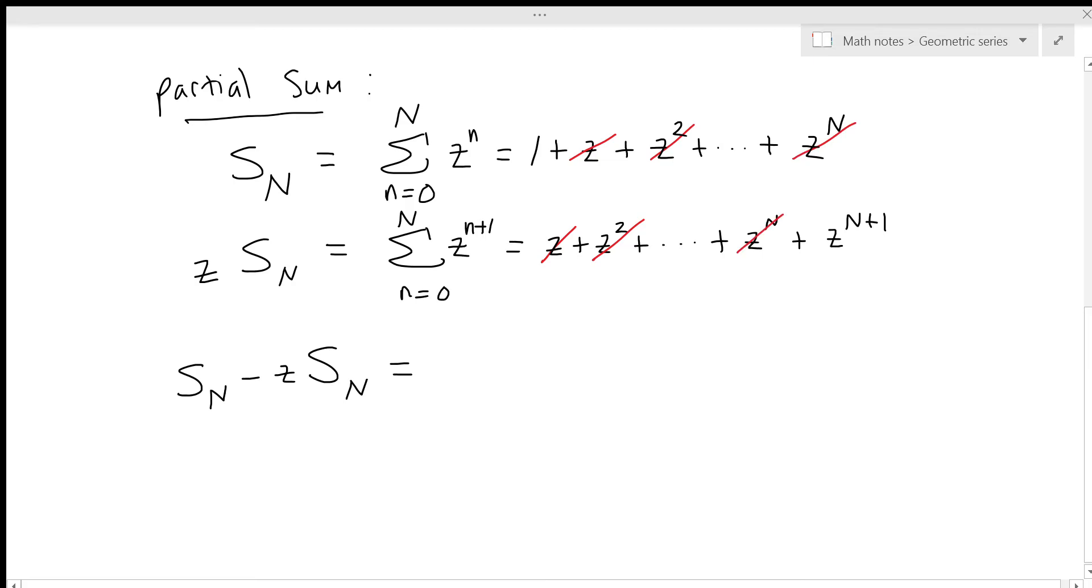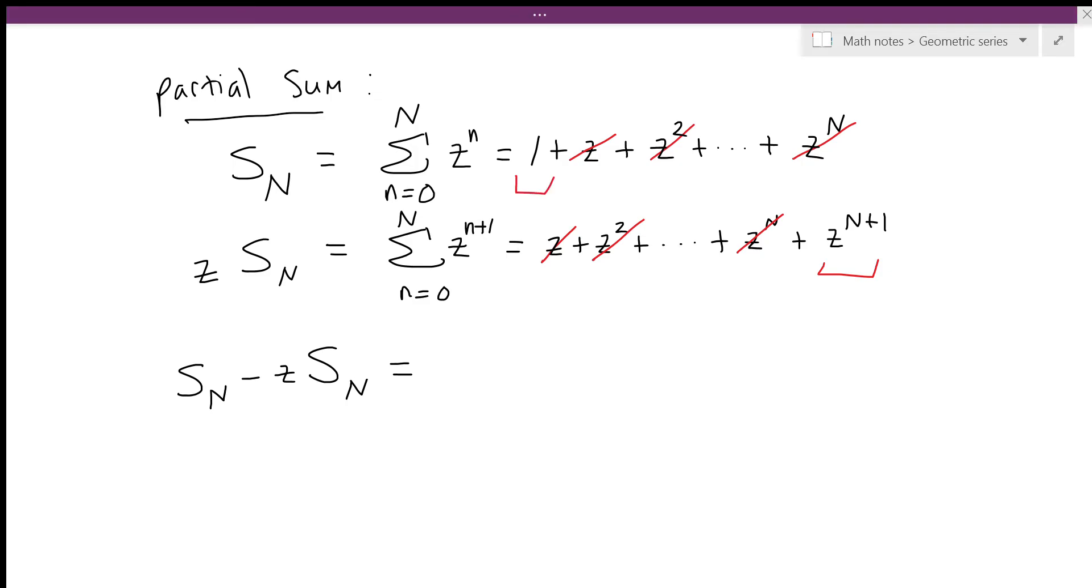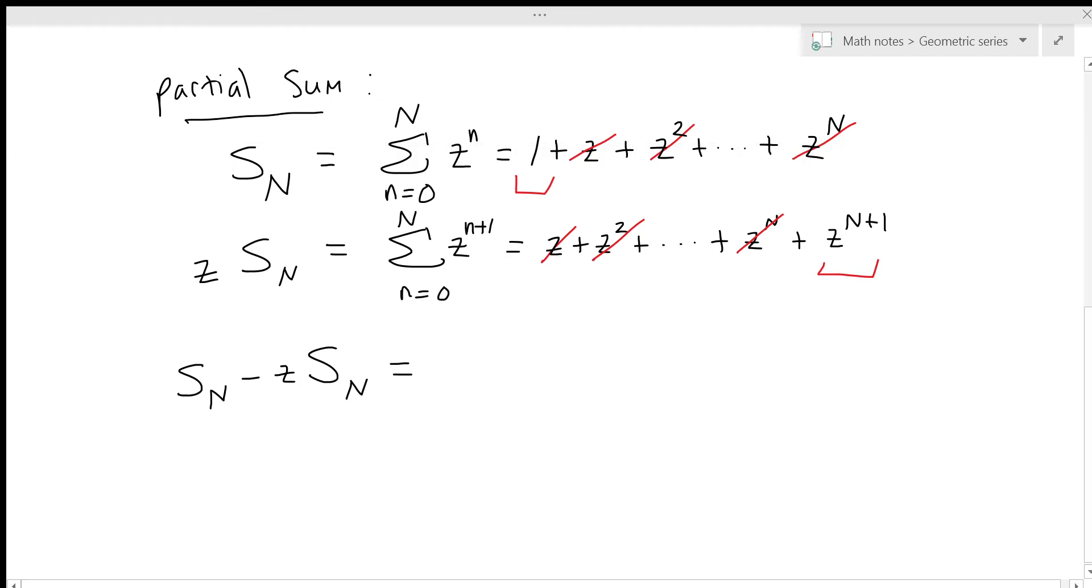And so the only terms we're left with are this z to the n plus 1 and the 1 here. So when we do this subtraction, the result is just 1 minus z to the n plus 1. And now we can rewrite this like this: 1 minus z times S_N is equal to 1 minus z to the n plus 1.